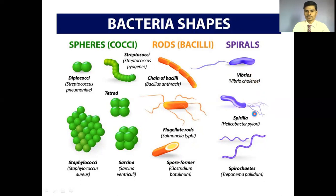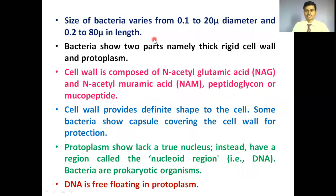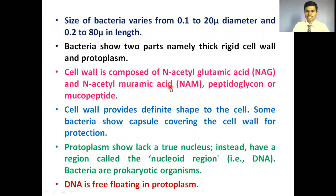As far as the size of the bacterial cell is concerned, the diameter varies from 0.1 to 20 microns and the length varies from 0.2 to 80 microns. Bacteria show two parts: a thick rigid outer cell wall and inner protoplasm. The bacterial cell wall is composed of N-acetylglucosamine (NAG) and N-acetylmuramic acid (NAM) — a peptidoglycan.